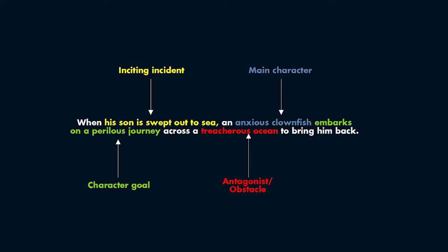I'm going to read an example of a log line from Finding Nemo: 'When the son is swept out to sea, an anxious clownfish embarks on a perilous journey across a treacherous ocean to bring him back.' That's an example of a log line. You get what's happening, you get who the character is, the antagonist, what their goal is, what the stakes are, and what the conflict is.